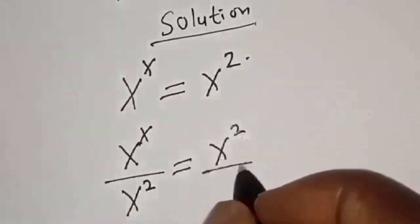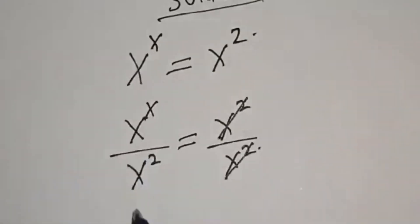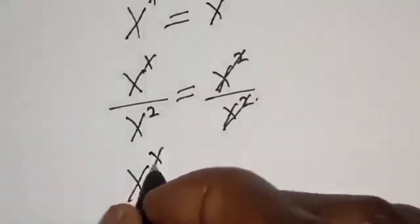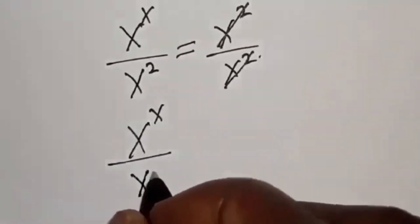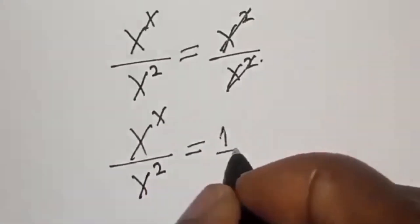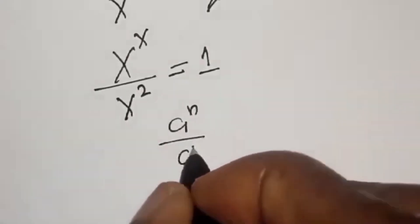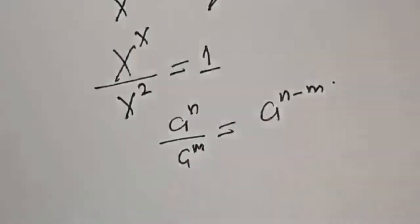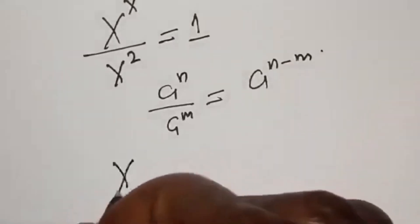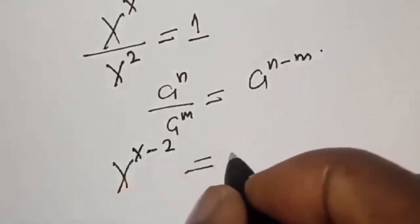When we cancel s squared on the right, the left-hand side becomes s raised to power s divided by s squared, which equals 1. Using the rule that a raised to power n over a raised to power m equals a raised to power n minus m, our left-hand side becomes s raised to power s minus 2, equal to 1.